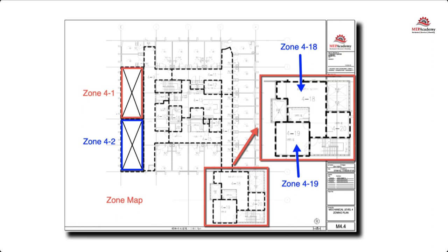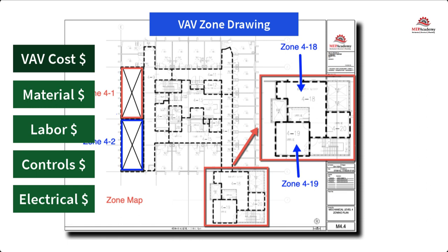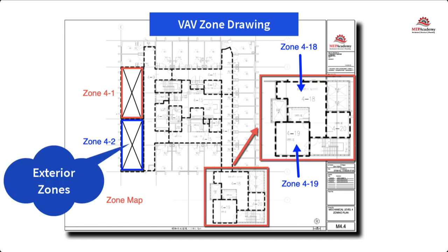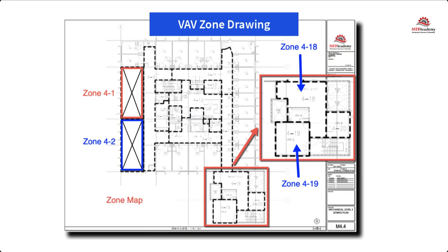One of the key elements of understanding VAV is to understand how it's zoned. Zoning is how the engineer divides up the building into separate VAV zones with each zone getting its own VAV box. To keep costs down, it's best to limit the amount of VAV boxes used, as each box adds additional costs for material, labor, controls, and electrical. After a heating and cooling load is completed on a building, the spaces can be divided into zones. Each individual zone should have a similar load profile and be served by the same VAV box. A typical zone may be offices that share a southern glass exposure or interior spaces. The idea of zoning is to break down large areas of a building into smaller zones with similar load profiles.